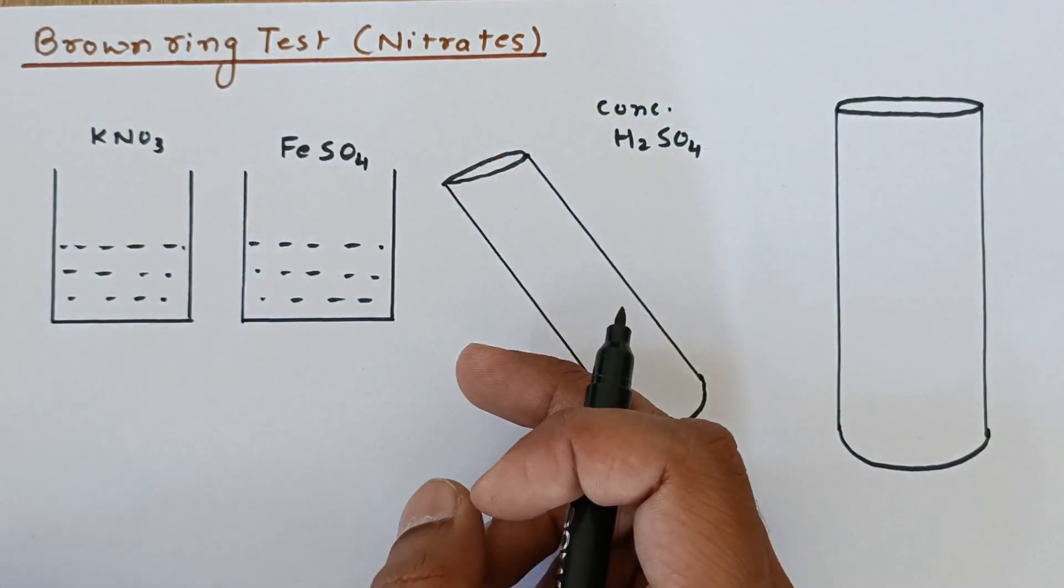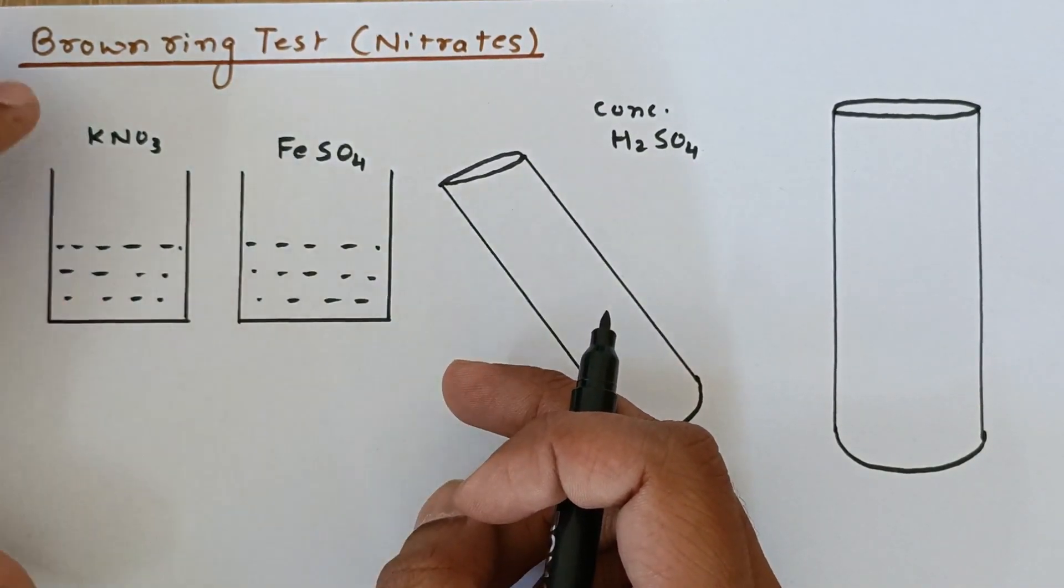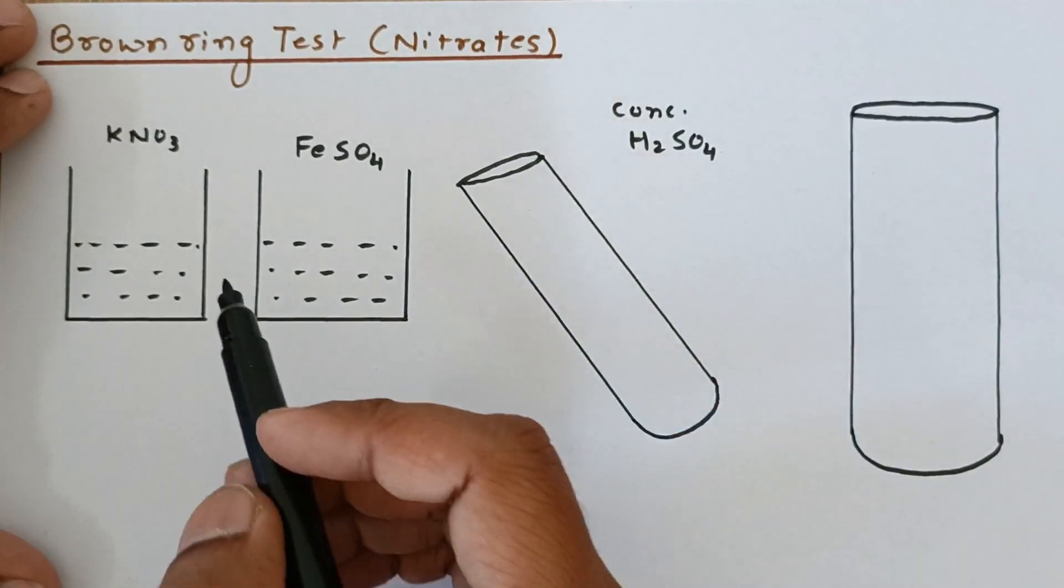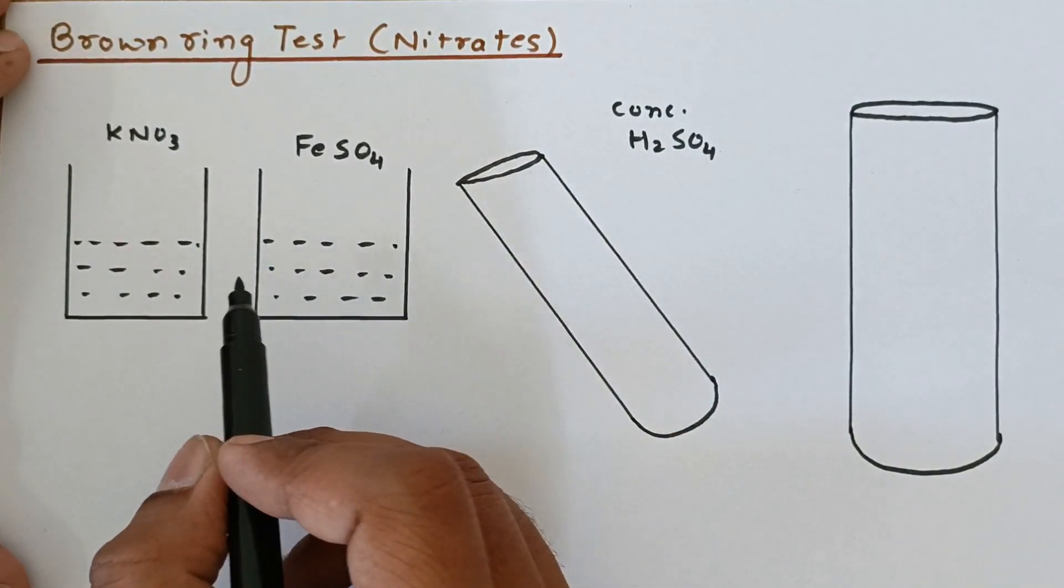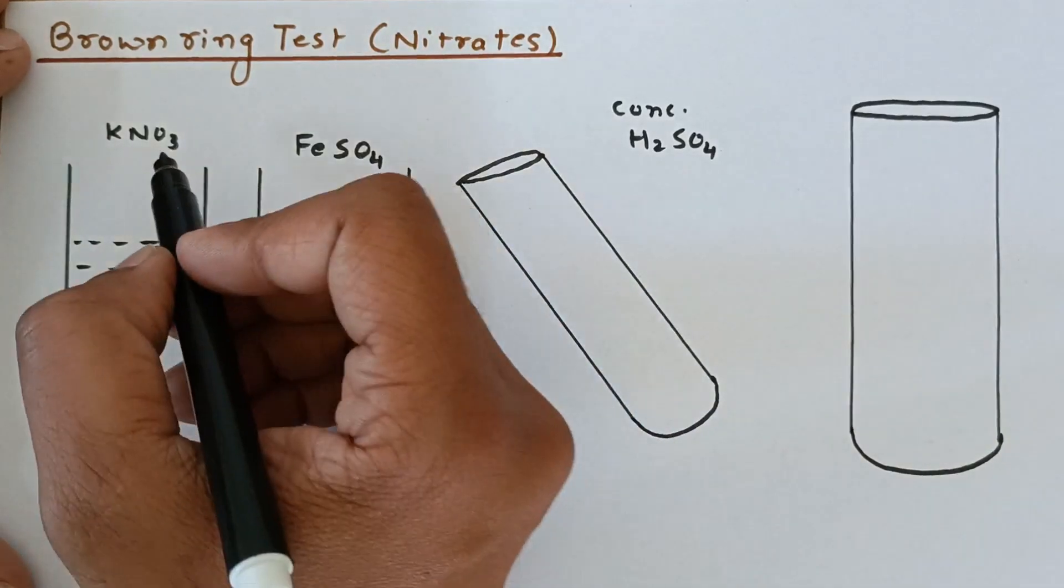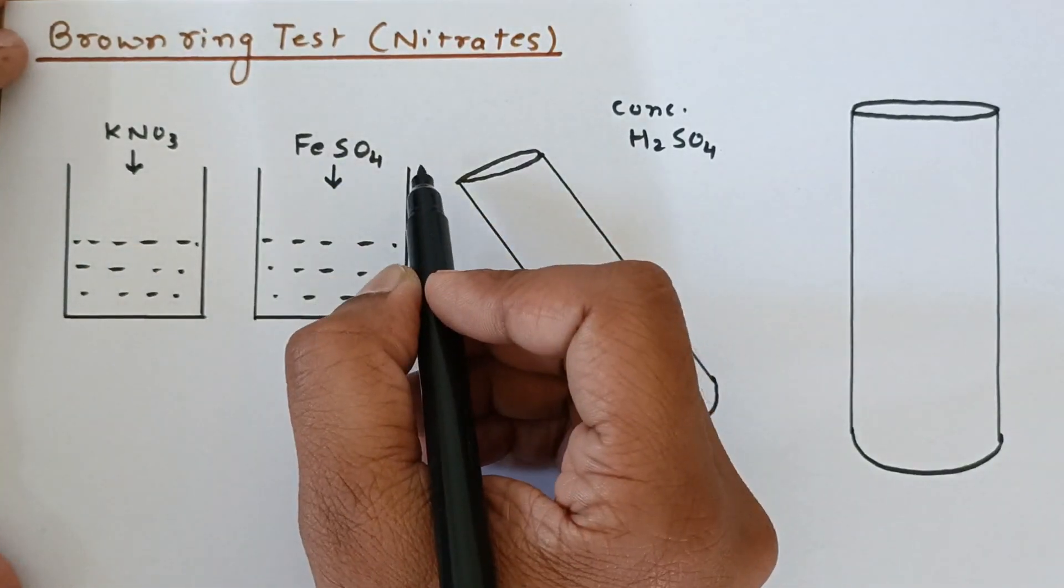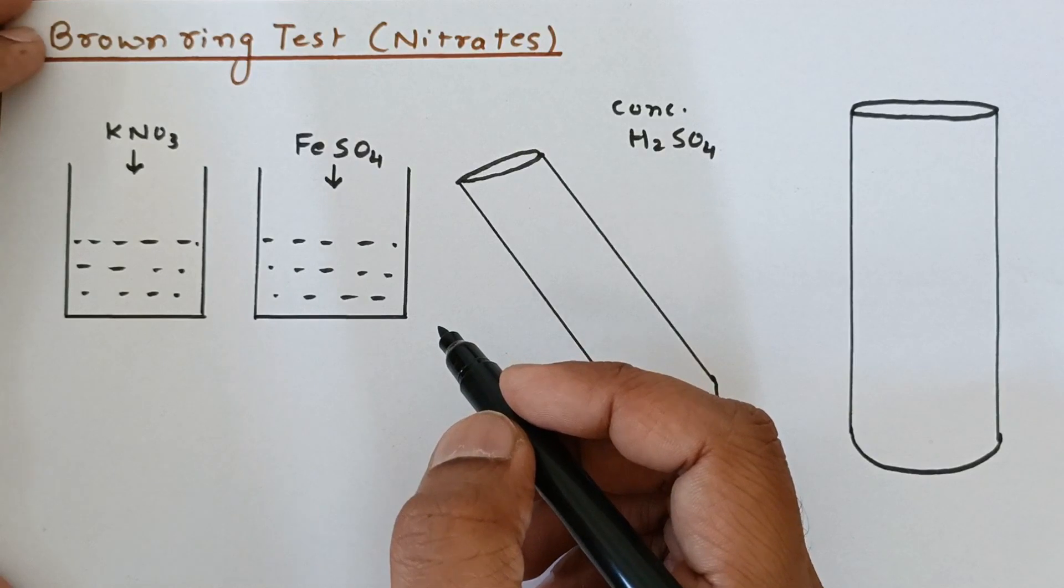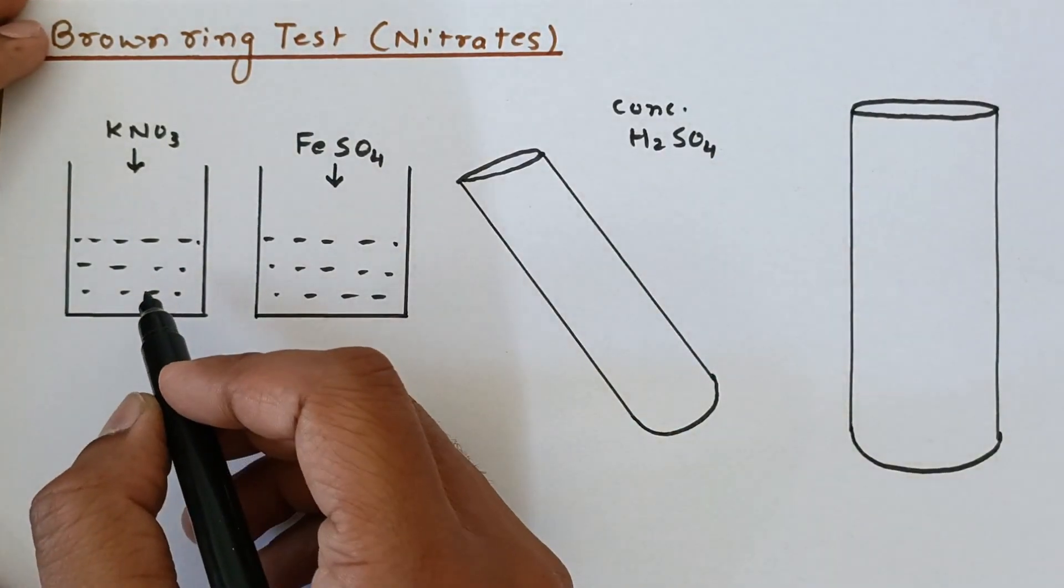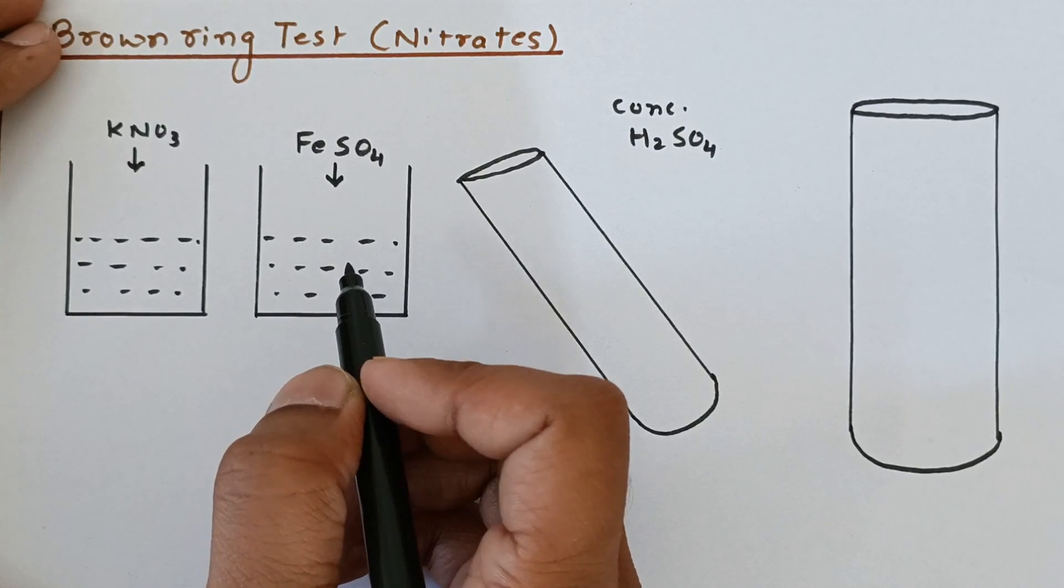So in the brown ring test, we check the nitrate ions present in the salt. You already have seen in the video that I have taken two beakers with about 200 ml of water in each, and half a spatula of KNO3 and FeSO4 salts I have added into both beakers containing water respectively. Please note that this is distilled water, not tap water we are going to use for our experiment.